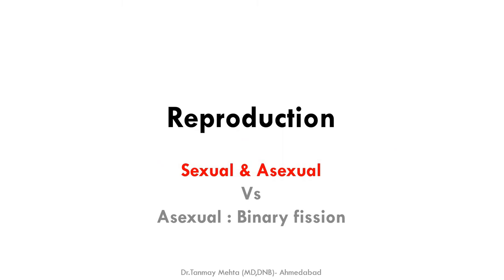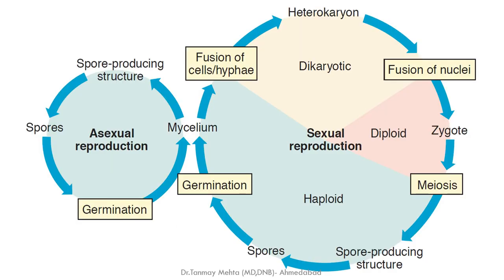Reproduction. Fungi can reproduce sexually as well as asexually, while bacteria reproduce asexually, usually by binary fission. Fungus can show asexual reproduction from spore to mycelium, while there is also a sexual reproduction cycle involving male and female spores, then zygote and spore-producing structures.